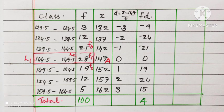Second step is calculating mode. The mode class is 144.5 to 149.5. Therefore, lower limit is 144.5 and the upper limit is 149.5. f0 is 21, f1 is 28, and f2 is 19.